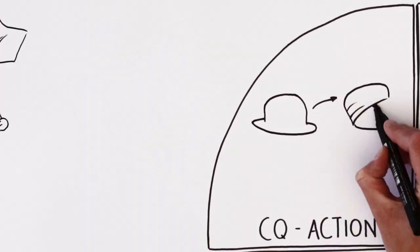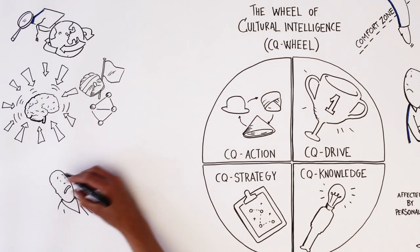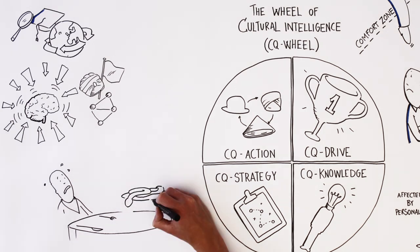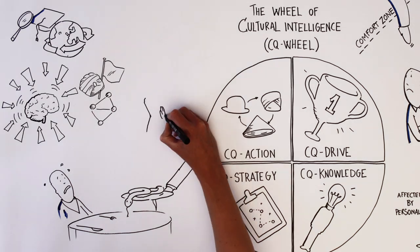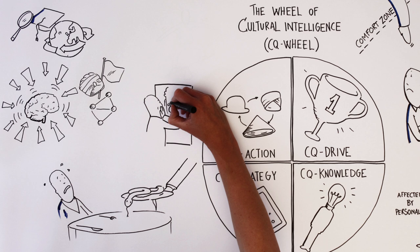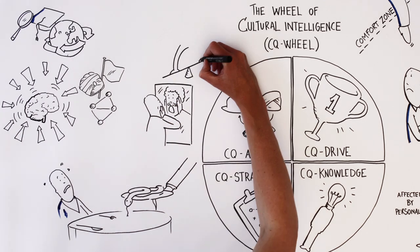The last bit is CQ action. This is very important because it doesn't matter if you feel, know and plan culturally intelligent if you don't feel comfortable doing something that might be new to you. So you have to be able to act in a way that doesn't come natural to you, without of course challenging your inner core so much that you can't recognize yourself. Striking this balance is CQ action.